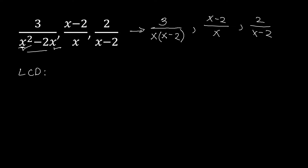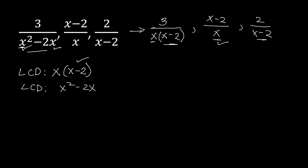Now getting the LCD: we list all factors from the denominators. The first denominator gives us x — checking the other, it also has x, so we write x once. Next factor is (x−2) — multiplying into the LCD. This factor also appears in the second denominator, so we don't repeat it. Our LCD is x times (x−2), which can be expanded to x squared minus 2x, though you may leave it in factored form.